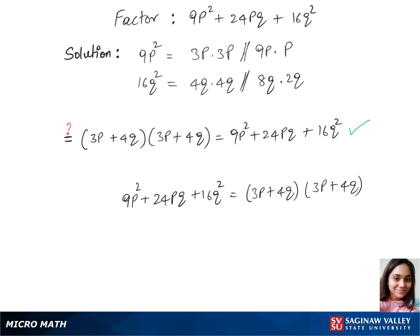So the factors for 9p square plus 24pq plus 16q square are 3p plus 4q times 3p plus 4q.